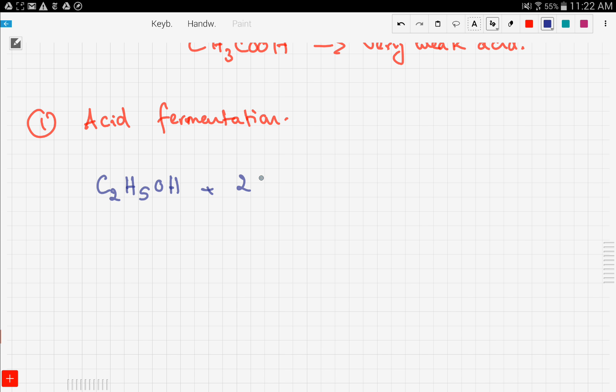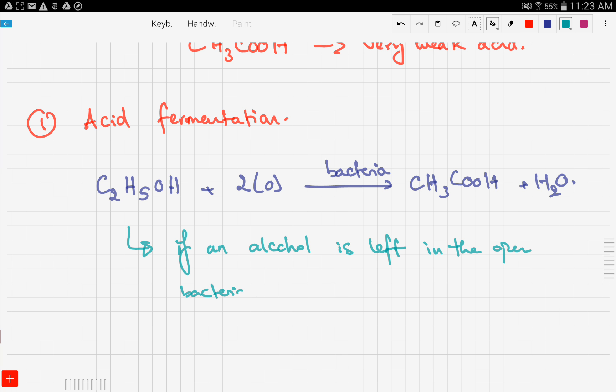Oxygen is going to react with it plus some bacteria present in the air, and this produces ethanoic acid: CH3COOH plus some water. This is a biological method because it involves natural organisms since bacteria is involved. If an alcohol is left in the open, bacteria reacts with it to produce ethanoic acid. This is the conclusion of acid fermentation.